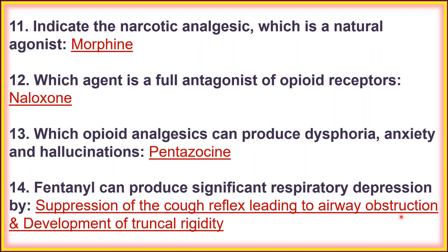Fourteenth, fentanyl can produce significant respiratory depression by suppression of cough reflex leading to airway obstruction and development of truncal rigidity. These are two mechanisms by which fentanyl produces respiratory depression.